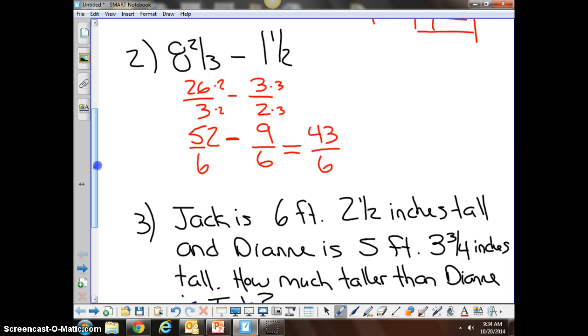We have an improper fraction. We can never ever give our answer in an improper fraction, therefore we convert it into a mixed number. 6 goes into 43 seven times with 1 left over, you keep your denominator of 6. 7 and 1/6th is your final.